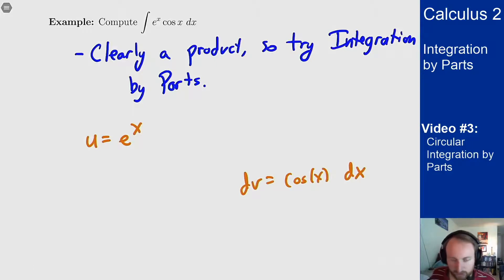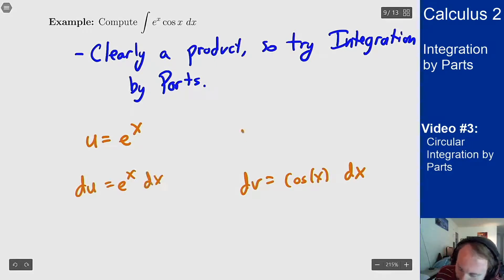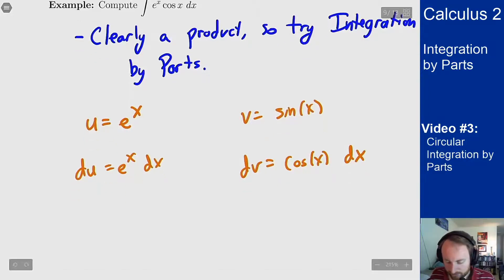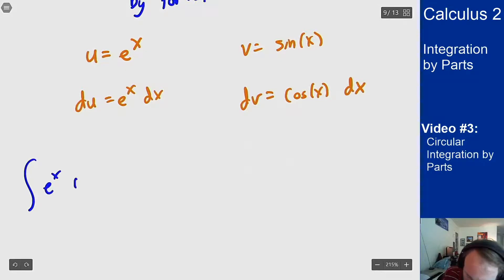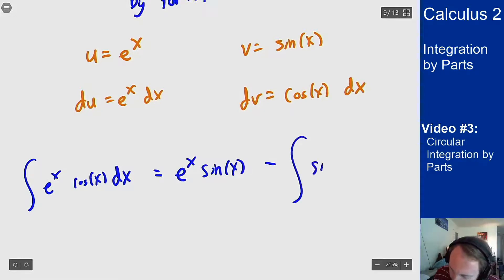What does that give me? Well then I can fill in the rest of my table. So du is e to the x dx and then v is just sine of x. Now I can do the integration by parts. So integral of u dv equals uv minus the integral of v du.